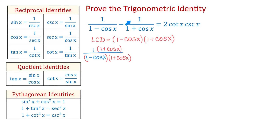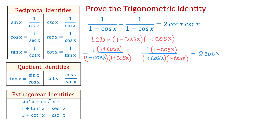In the second fraction, we will multiply both the numerator and the denominator by 1 minus cosine of x. Now on the right side we have 2 cotangent of x cosecant of x. And now on the left side, both fractions have the same denominator. Then in the numerators, I will remove these parentheses and I will rewrite the whole identity.